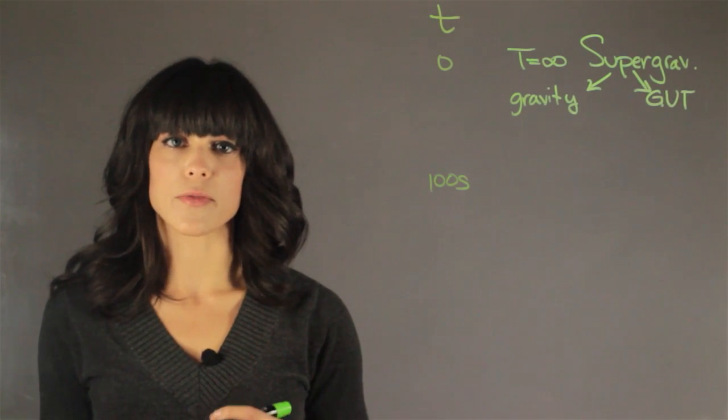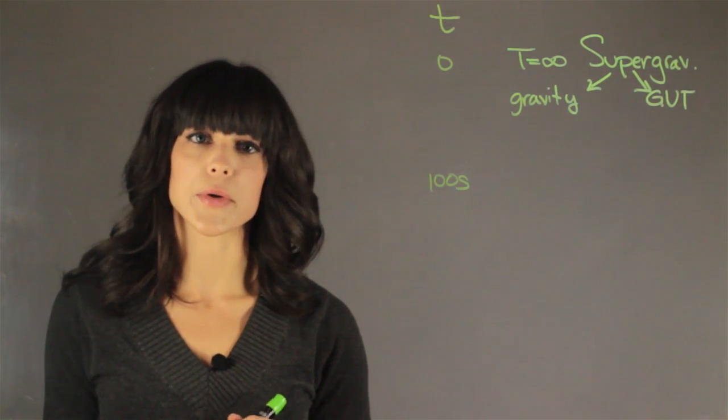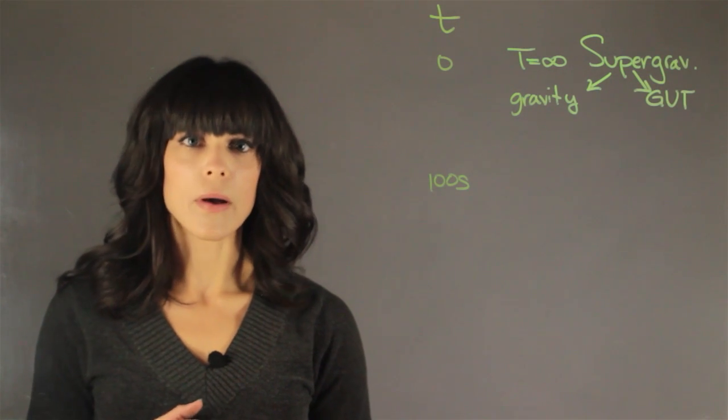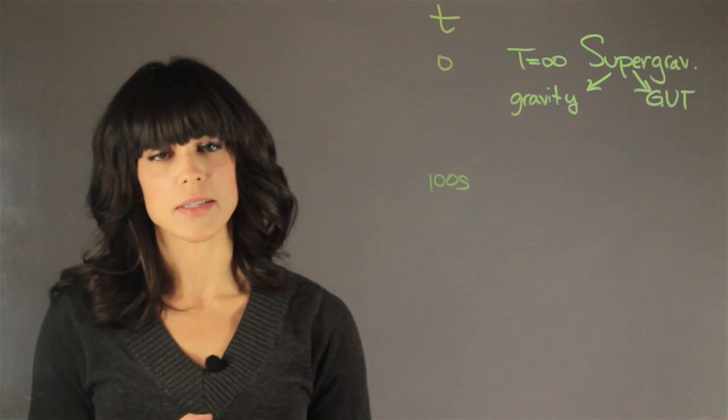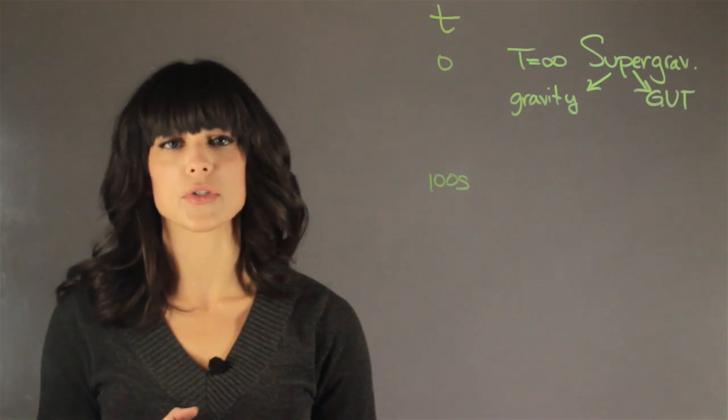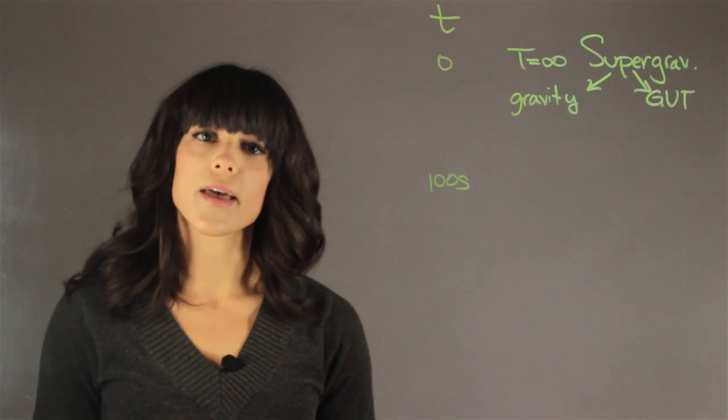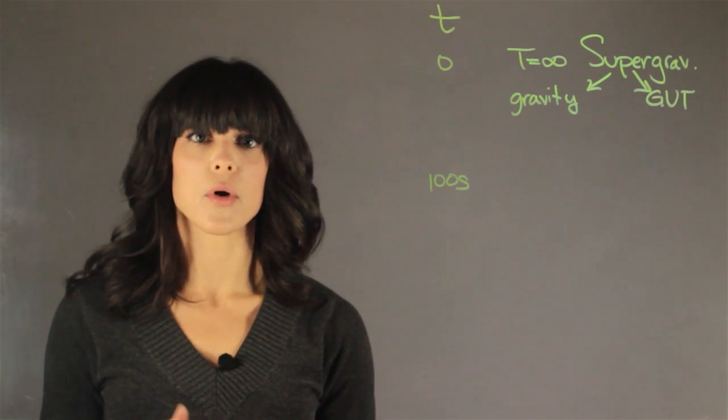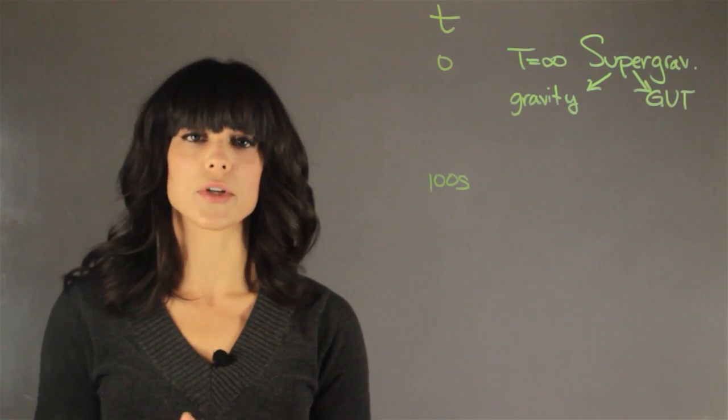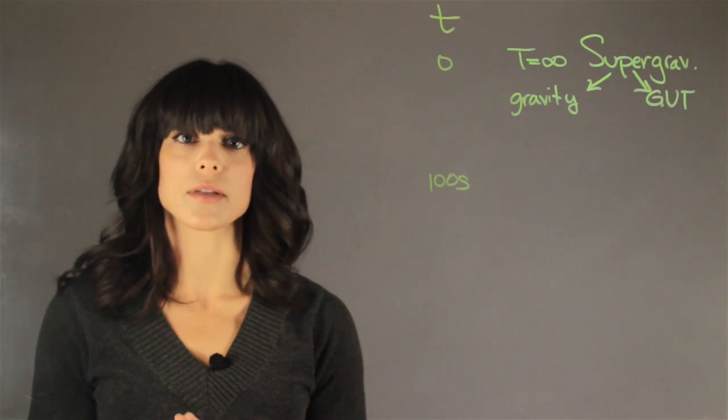The GUT is the grand unified force, and it's made out of the weak force, which is the interactions of fermions. And fermions are particles like electrons. And then we have the strong force, which is the nuclear forces, so protons, neutrons—they all interact using the strong force.